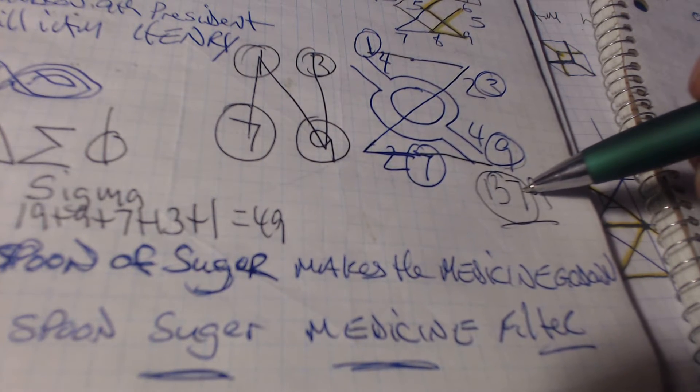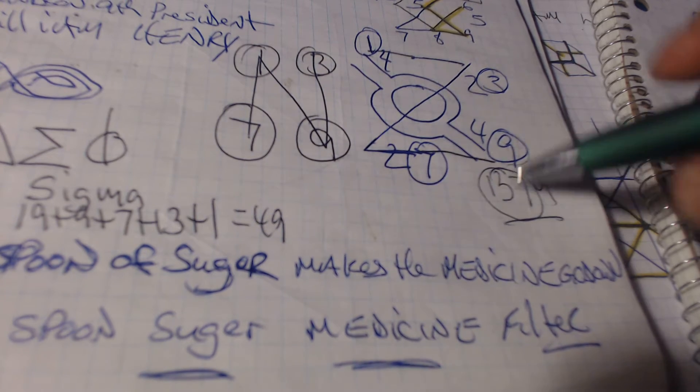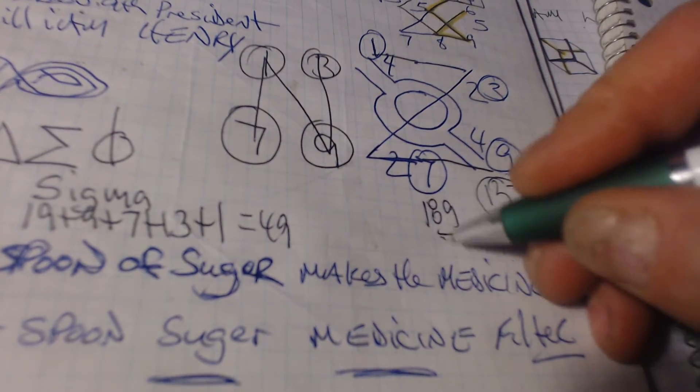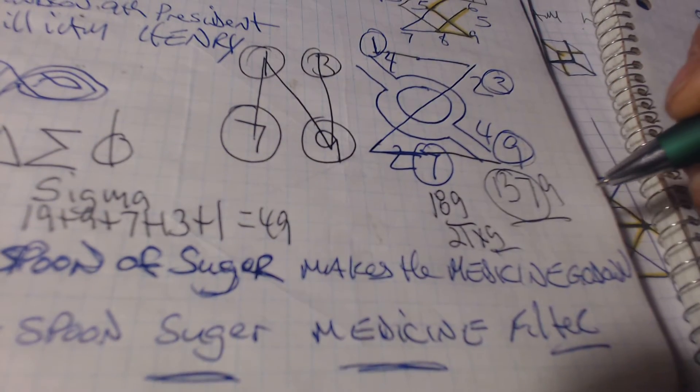9 times 7 is 63, times 3, 189. 3 by 7 is 21, times 9, 189.